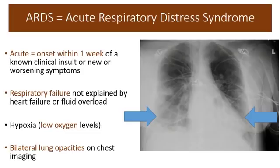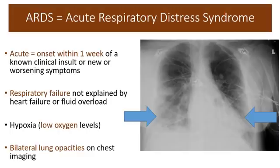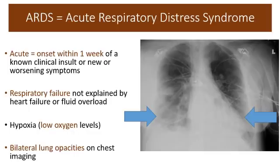So what is ARDS? ARDS stands for Acute Respiratory Distress Syndrome, which is almost self-explanatory in its defining features. First, it has to be acute — onset within one week of a known clinical insult or new or worsening symptoms, which applies to coronavirus infection. Second, you have to have respiratory failure — inability to breathe, which is hypoxia or shortness of breath — not explained by heart failure or fluid overload. Third, you must have very severe hypoxia, with blood oxygen levels falling. And finally, you have to have bilateral lung opacities on chest imaging.